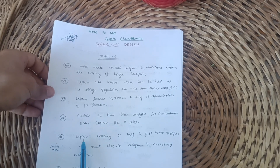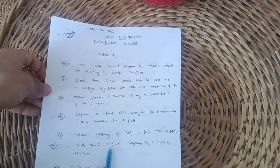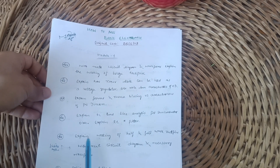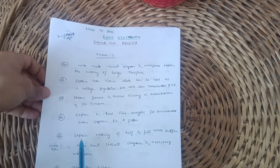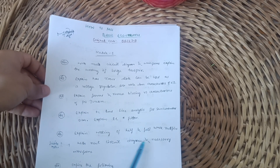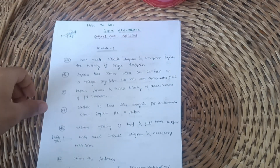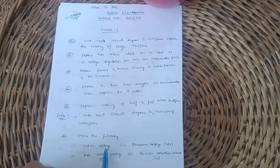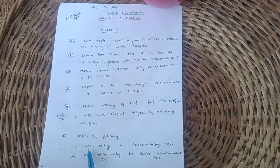Next, there is a possibility they may ask you to explain the working of half and full wave rectifier with a neat circuit diagram and necessary waveforms — this is a super important question. They may ask only about half wave rectifier, or sometimes only about full wave rectifier with neat circuit diagrams. Some small definitions are also important: cut-in voltage, also called knee voltage, and other diode parameters including breakdown voltage abbreviated as VBR, peak inverse voltage PIV, and reverse saturation current IR.